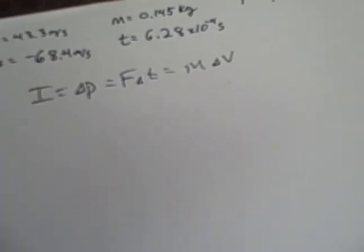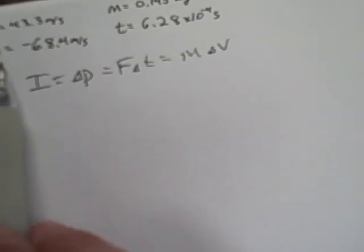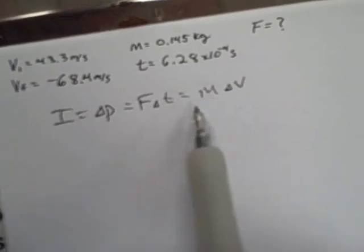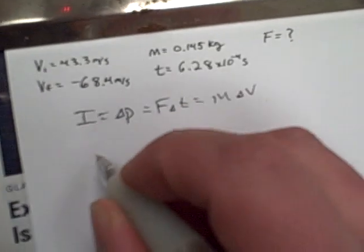From here we pick two of these expressions to set equal to each other. Since we're given the initial and final velocity, mass, and time, and we're looking for force, it'll be these two that we're going to select.